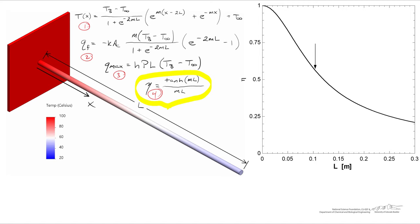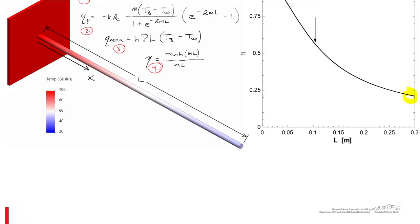This is exactly what we see when plotting η as a function of length — the arrow again represents our current length. This fin, as shown, has a thermal efficiency of somewhere around 60%. To better understand what this efficiency means in practice, I ran a series of FEA simulations varying fin length from a very short value to a very long value. We should observe very high efficiency for a short fin — most of it being effectively used — down to very low efficiency when we increase the length to 300 mm and beyond.